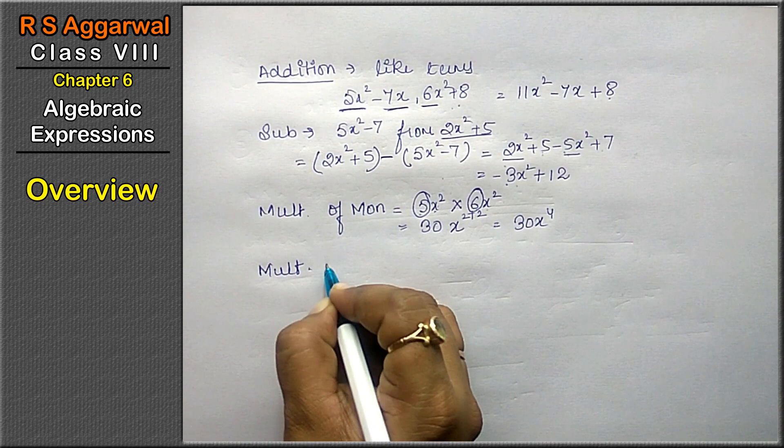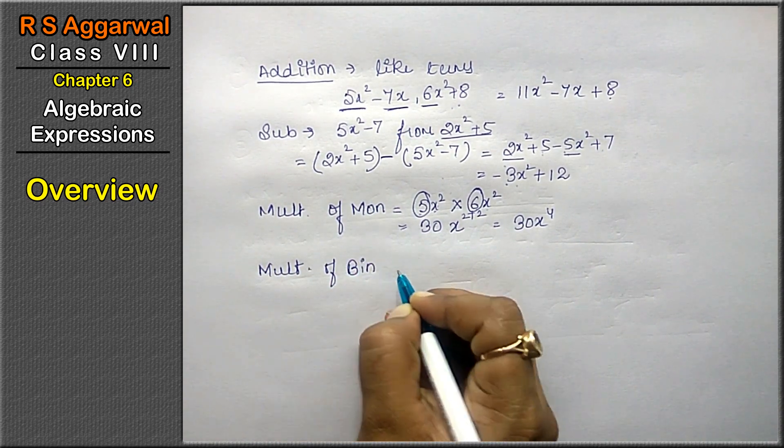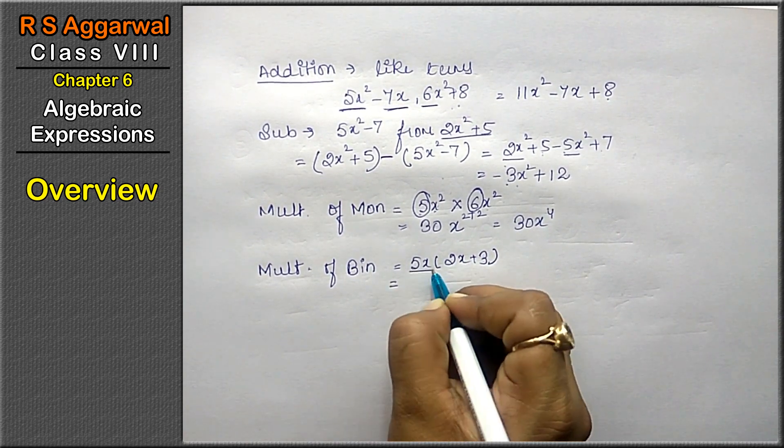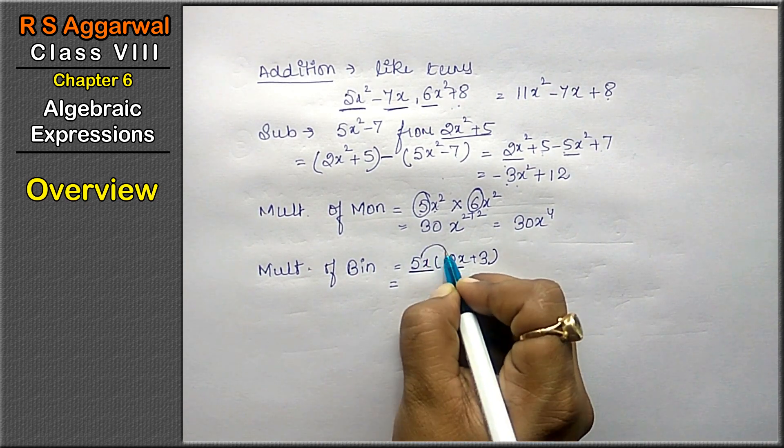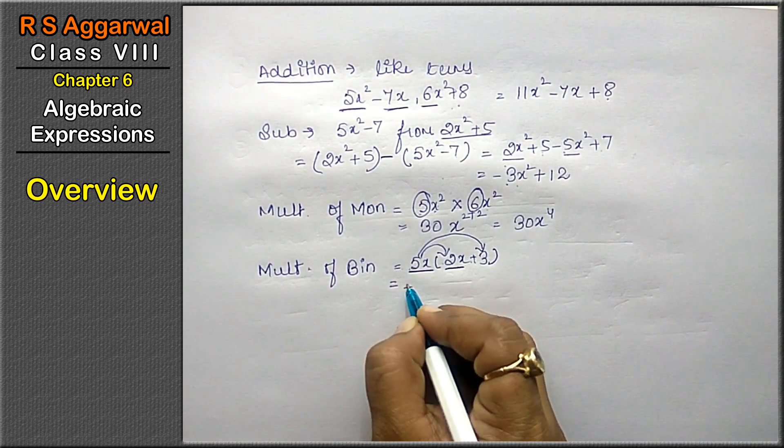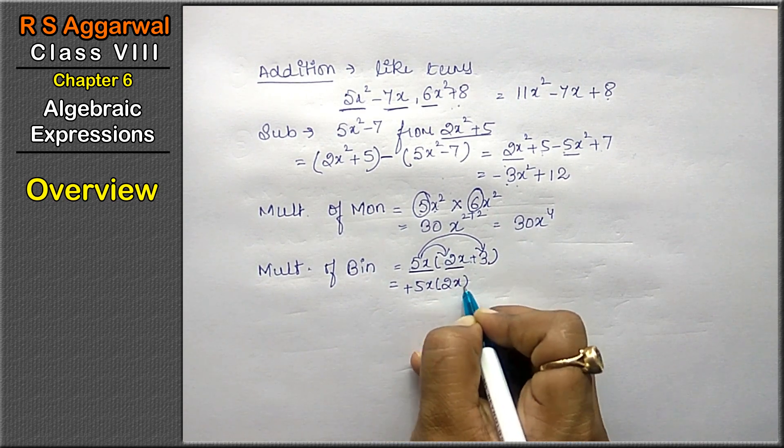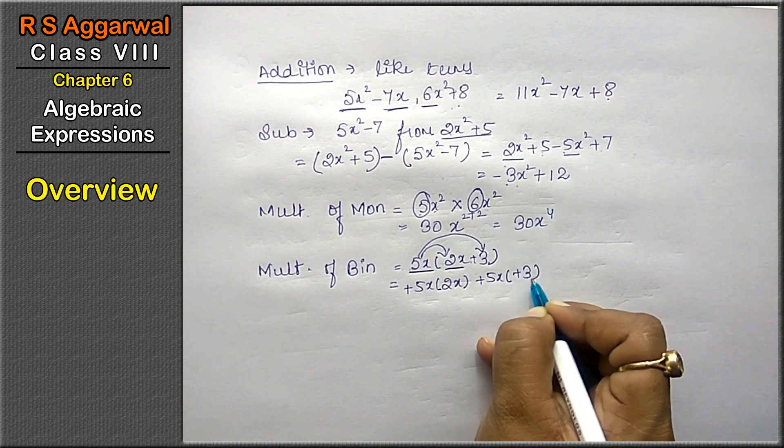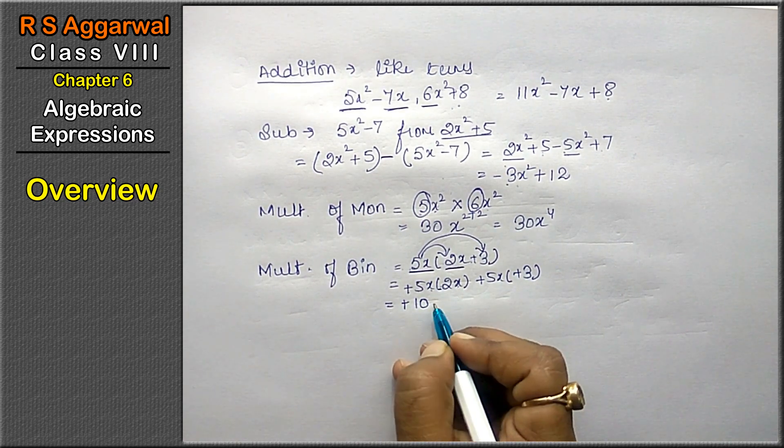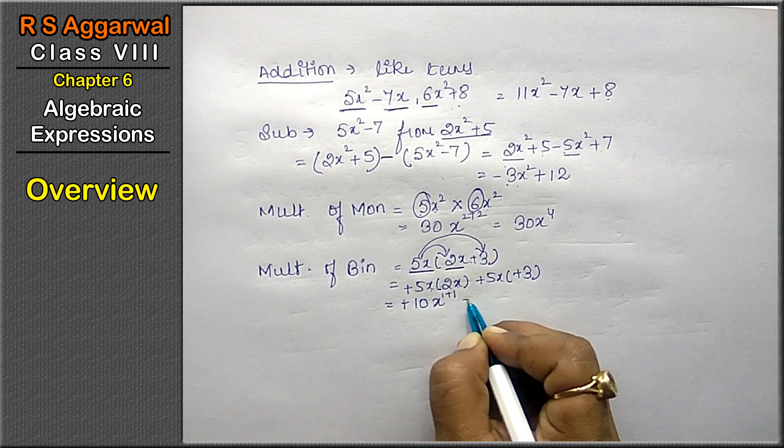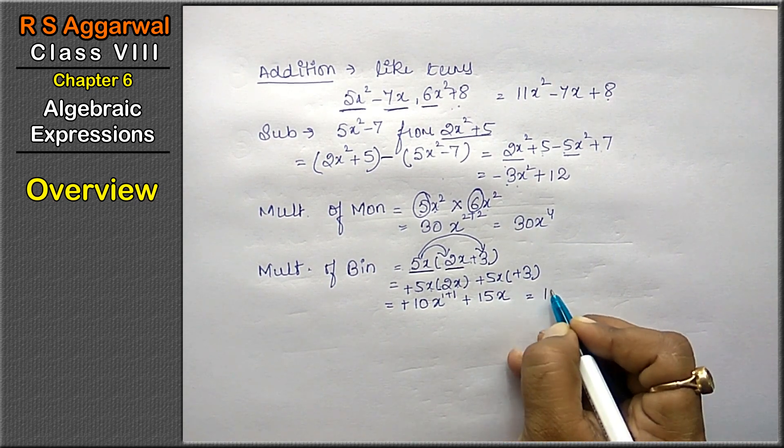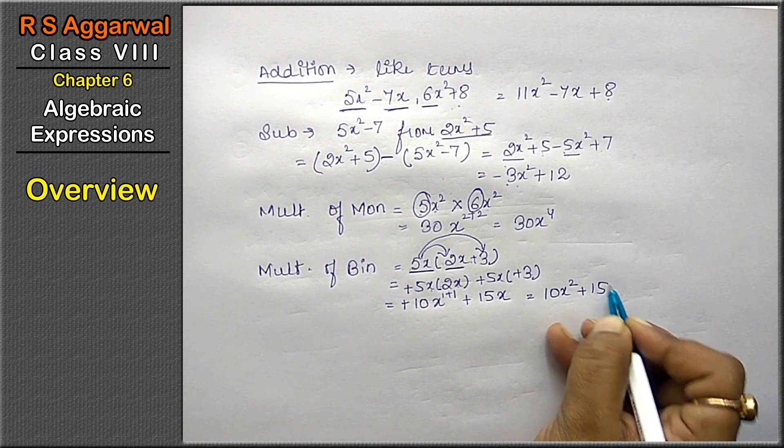Next thing is multiplication of binomial. Like 5x into 2x + 3. How do we multiply this? This 5x will multiply first with this, then 5x will multiply with this. The signs will also multiply. Like, +5x into 2x, +5x into +3. Plus, plus, plus, five, two's are 10, x into x, in multiplication powers add. Plus, five, three's are 15, constant times constant, no variable, so x comes. So answer is 10x² + 15x.